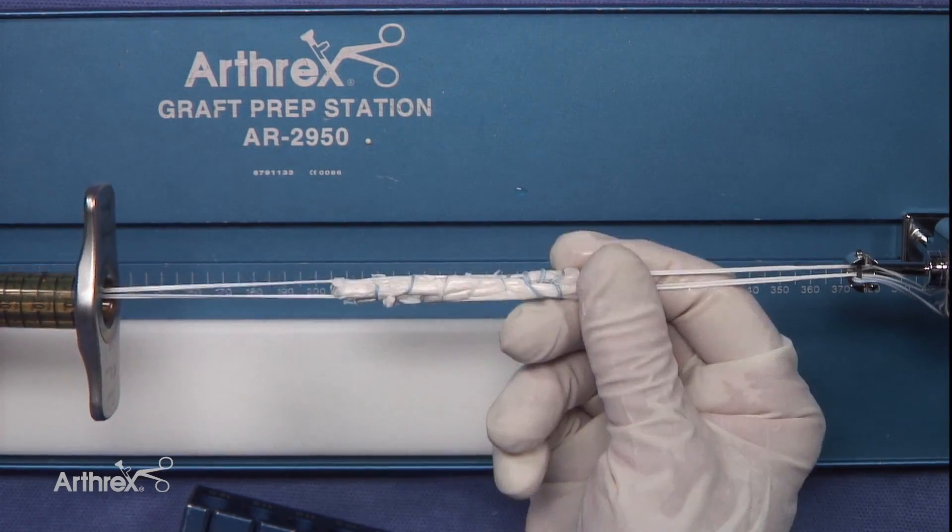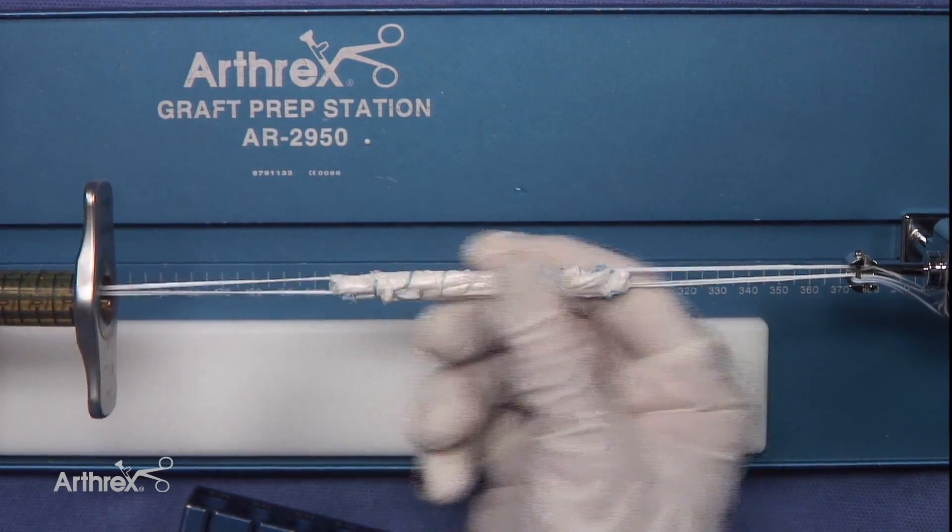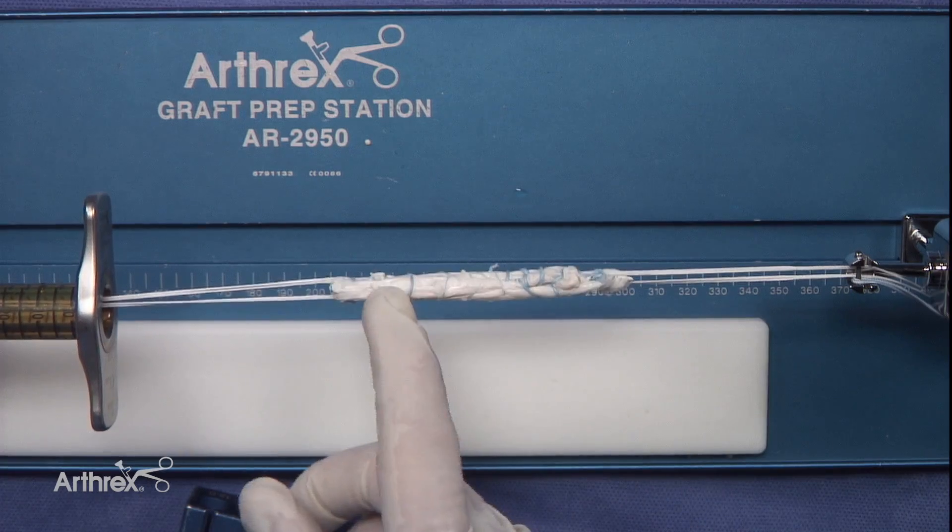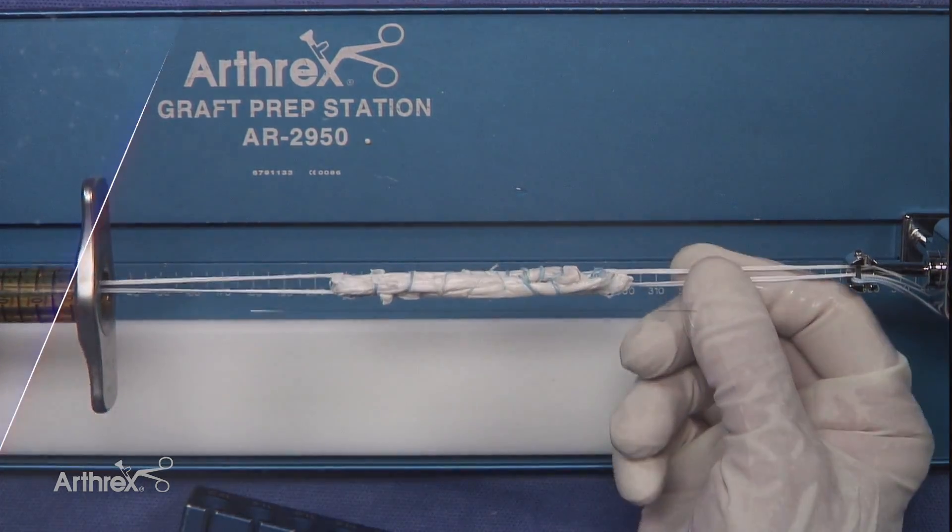In summary, we've simply done a six strand graft by looping it through three times and then using our suture fixation at both ends of our tightrope.